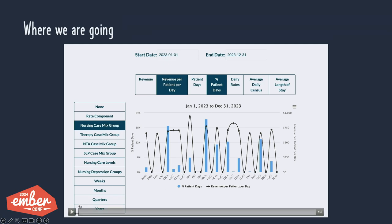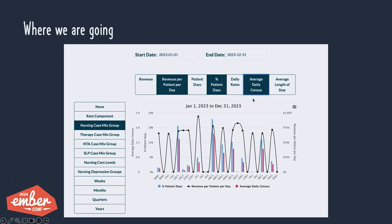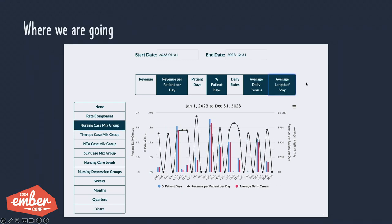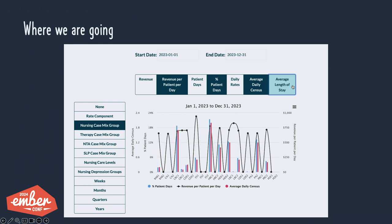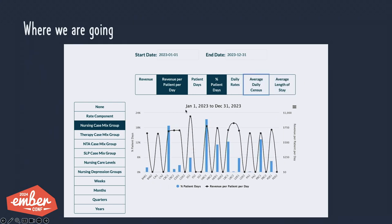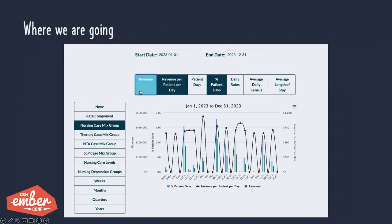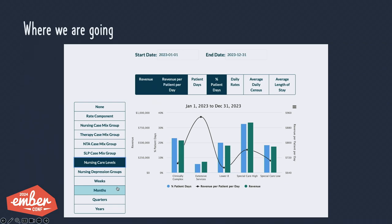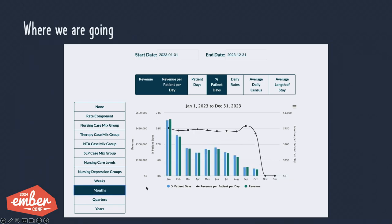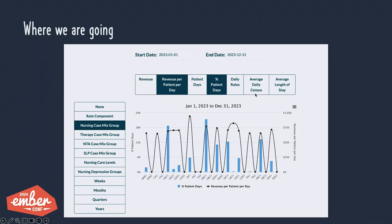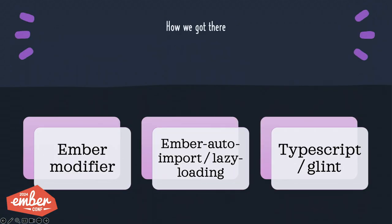I'm going to start by showing you the feature we ended up building. This is our little data analytics tool showing our HiCharts graph re-rendering upon each click of a different grouping. Here you're seeing the nursing casement groups, which are different nursing category diagnoses. The chart is re-rendering with revenue, and we can also group by nursing care levels, months, weeks, years, et cetera. So this is what we built.